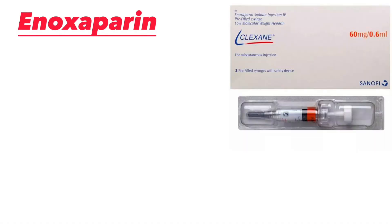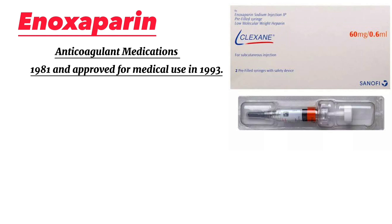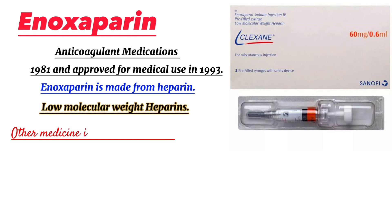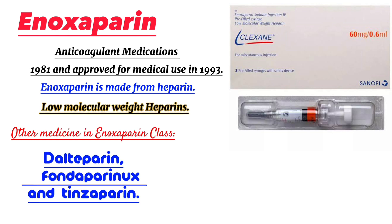Enoxaparin is an anticoagulant medication developed in 1981 and approved for medical use in 1993. It is made from heparin and belongs to the low molecular weight heparins class. Other medicines in the enoxaparin class include Dalteparin, Fondaparinux, and Tinzaparin.